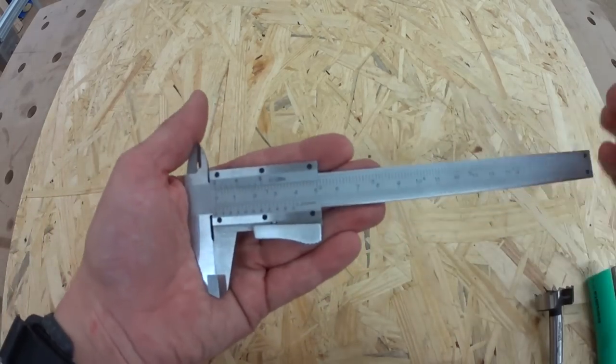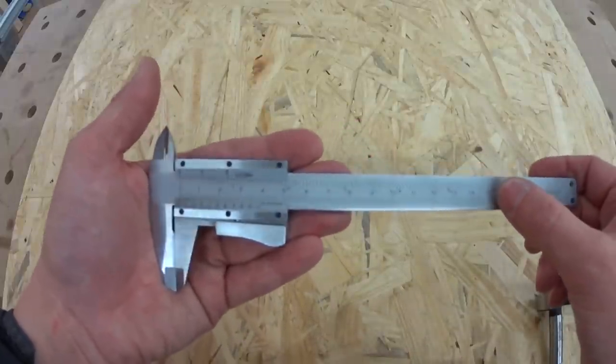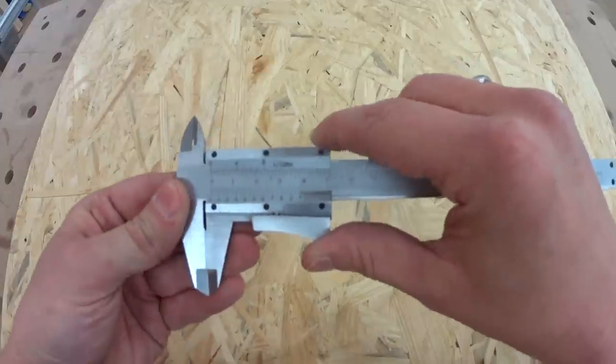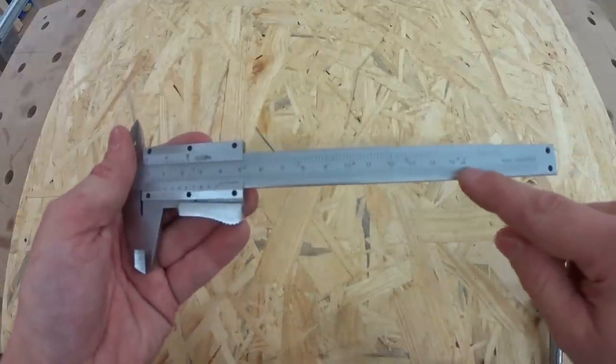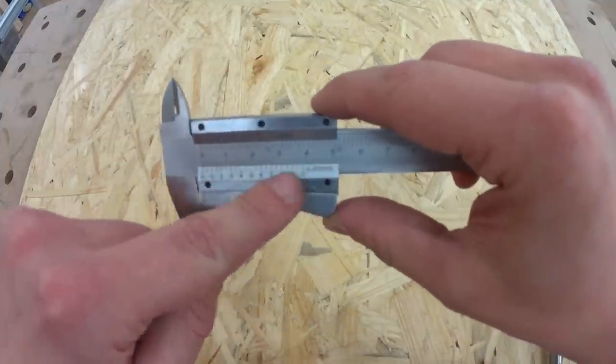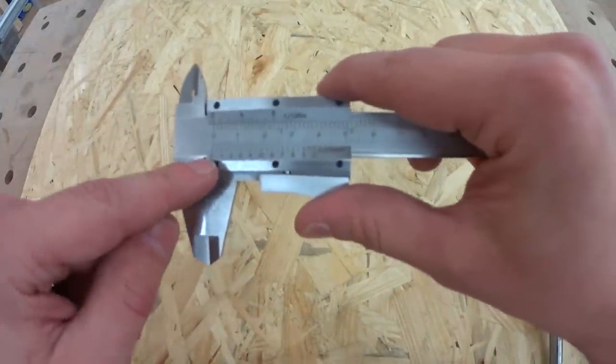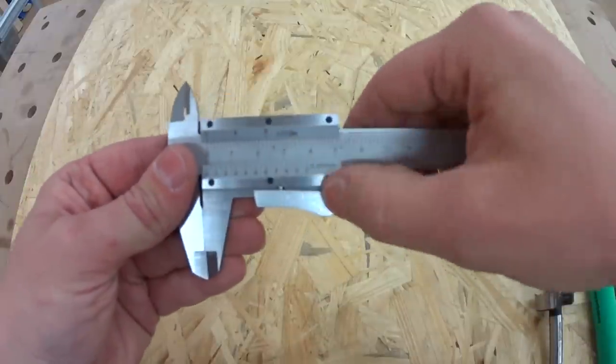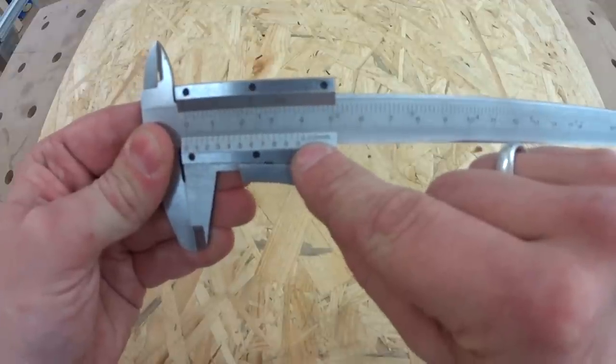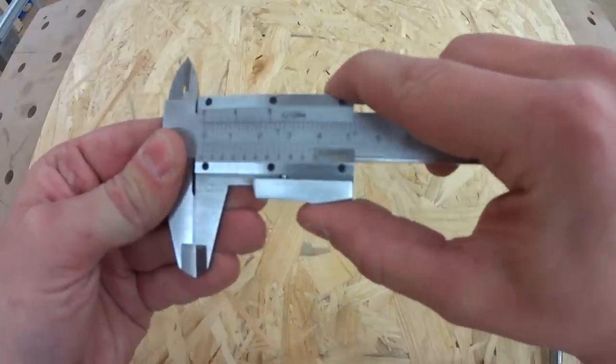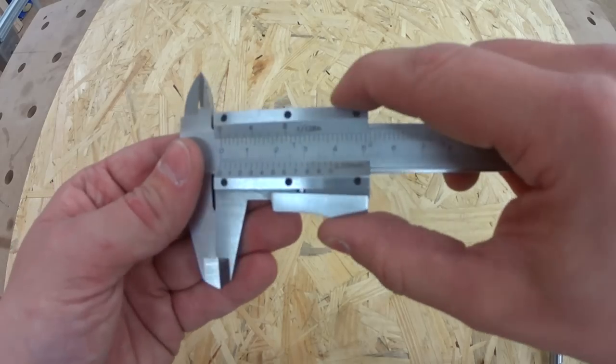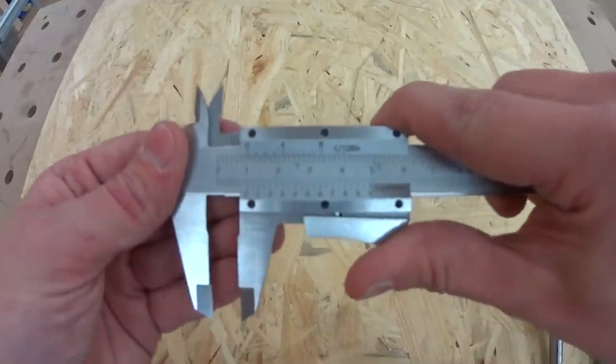Also available are different scale options. This one here is a vernier caliper. You have your standard scale here and you have this vernier scale which you can use to measure the decimal points. In this case you can measure to an accuracy of about 0.05 millimeters or 1/20th inch. It's a bit tricky to read out.